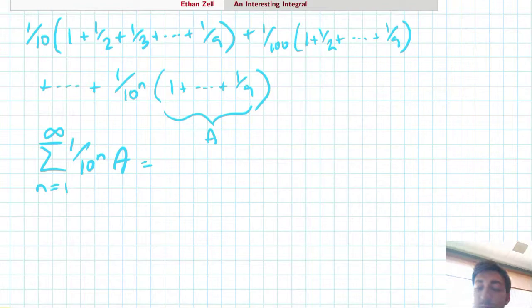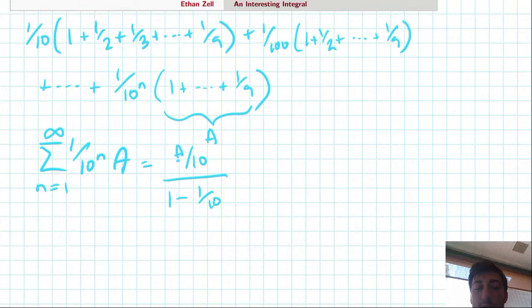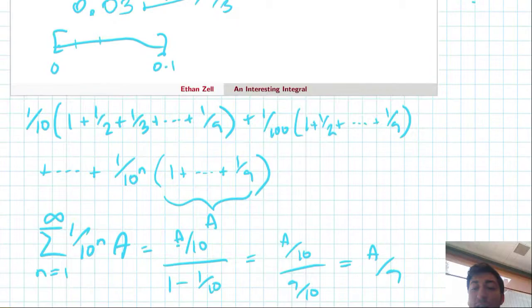Using the geometric formula, we can get it's a over ten over one minus one over ten, which is just a over ten over nine tenths, which is a over nine.